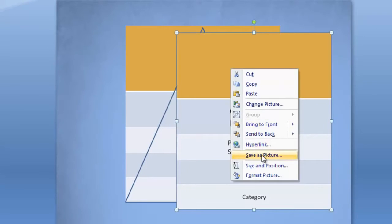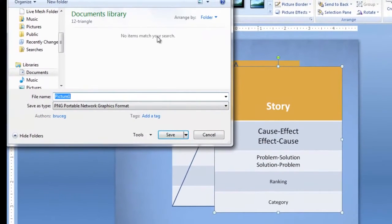Now you right click on it. Go to Save as Picture. And go ahead and call this maybe table. And you save it.